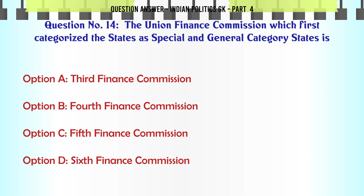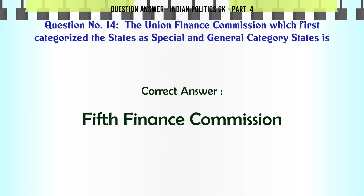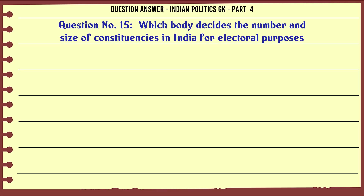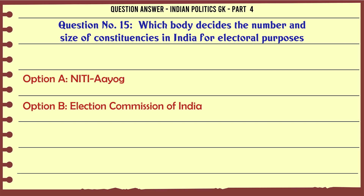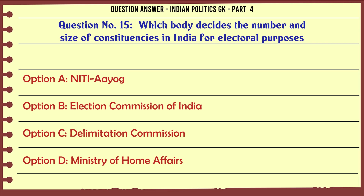The Union Finance Commission which first categorized the states as special and general category states is: A. Third Finance Commission. B. Fourth Finance Commission. C. Fifth Finance Commission. D. Sixth Finance Commission. The correct answer is the Fifth Finance Commission.